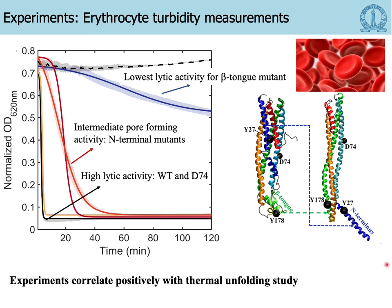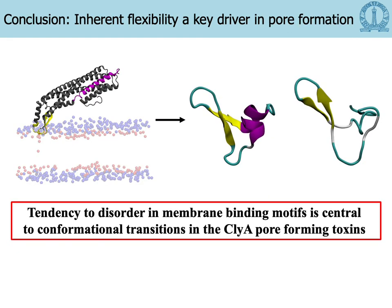For the N-terminus mutants there is intermediate activity, since the N-terminus is associated with the flipping out of the blue alpha helix and then binding to the membrane. The experiments correlate positively with the thermal unfolding study, indicating that greater flexibility — for example in the beta tongue — leads to more effective pore-forming capability. In conclusion, inherent flexibility is a key driver in pore formation.